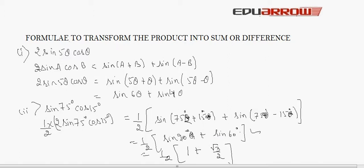If we have to find the numerical value, we put sin90° = 1 and sin60° = √3/2. Otherwise, the expression one-half [sin90° + sin60°] is itself the required answer. In this way, to solve such questions, we first change the product into the form 2 sinA cosB or cosA sinB, then apply the formula.